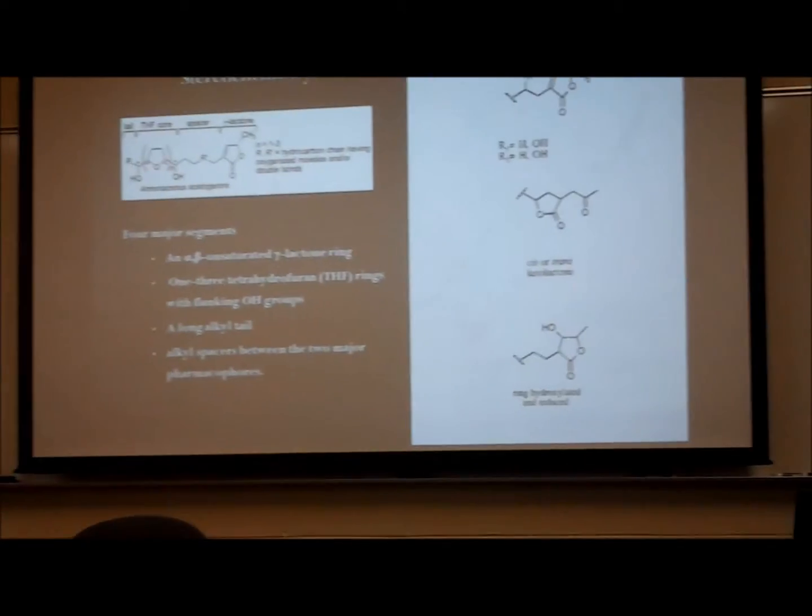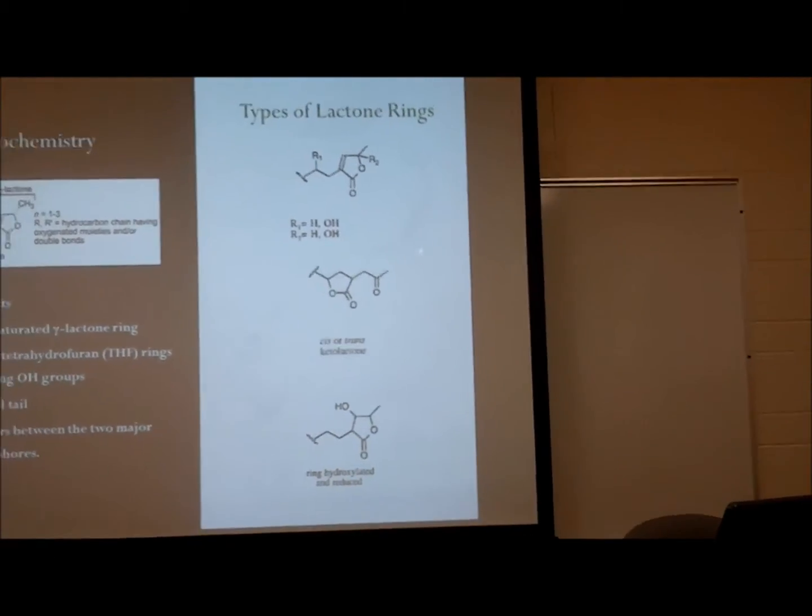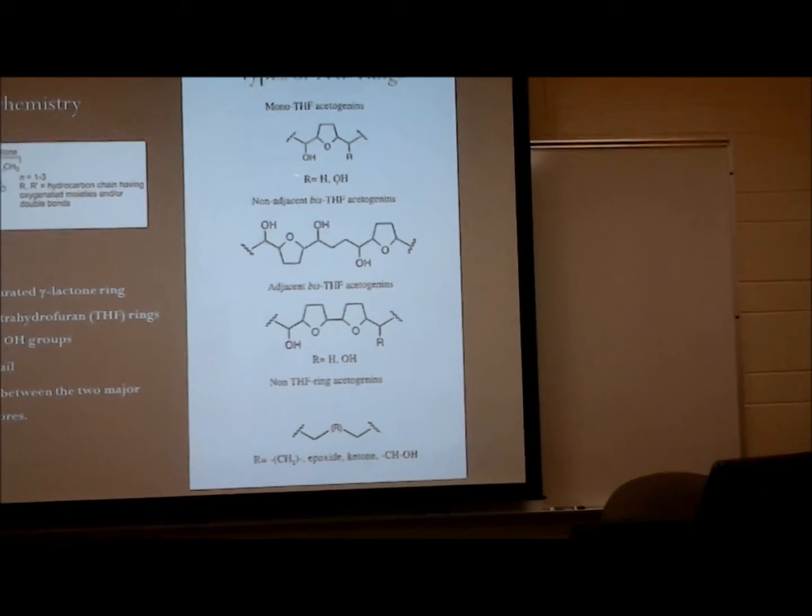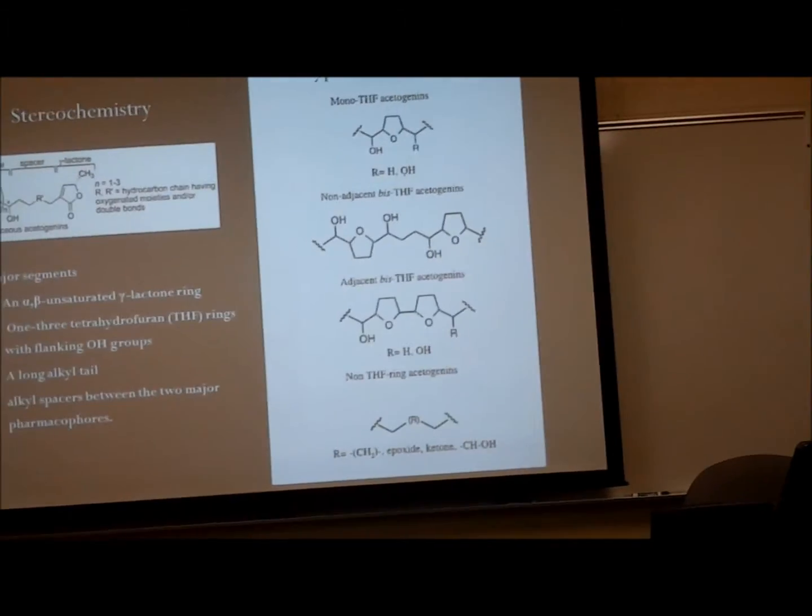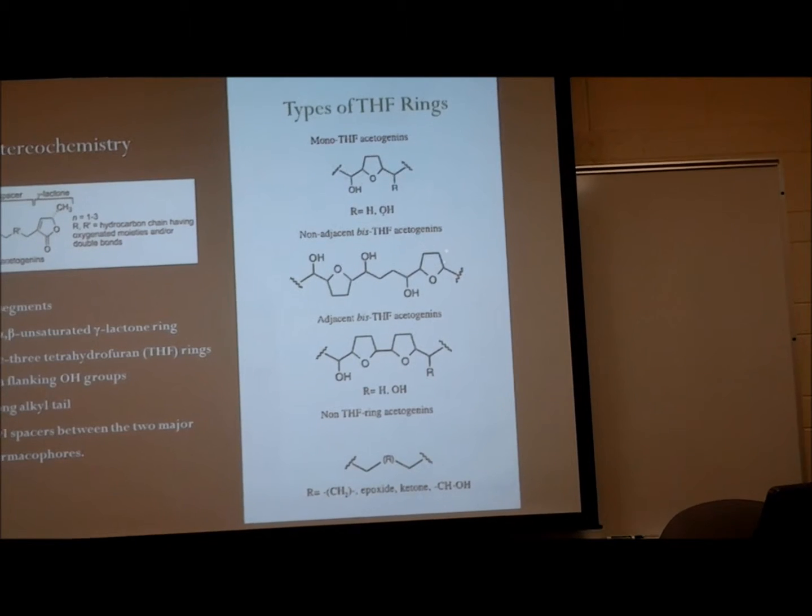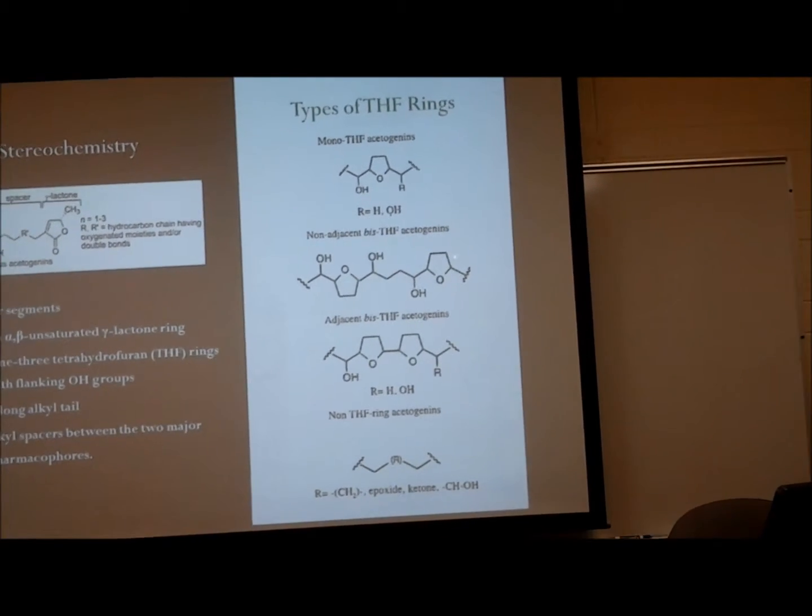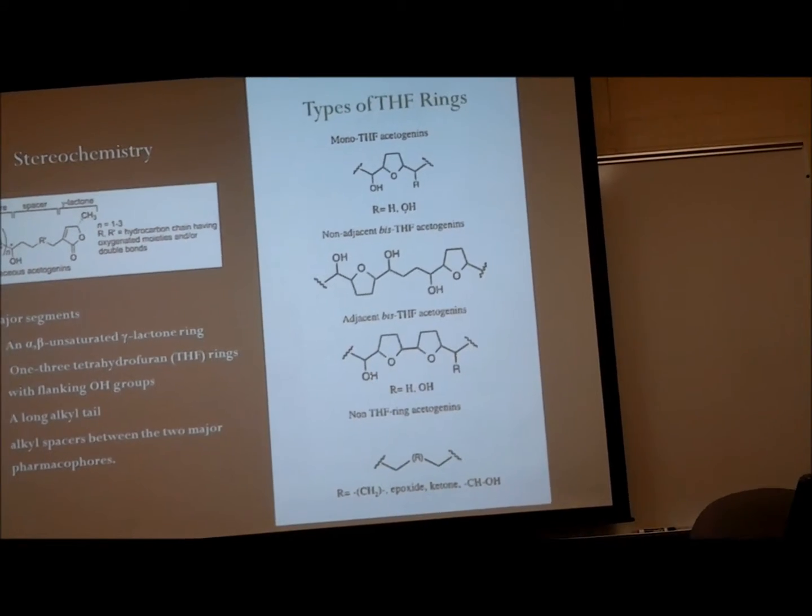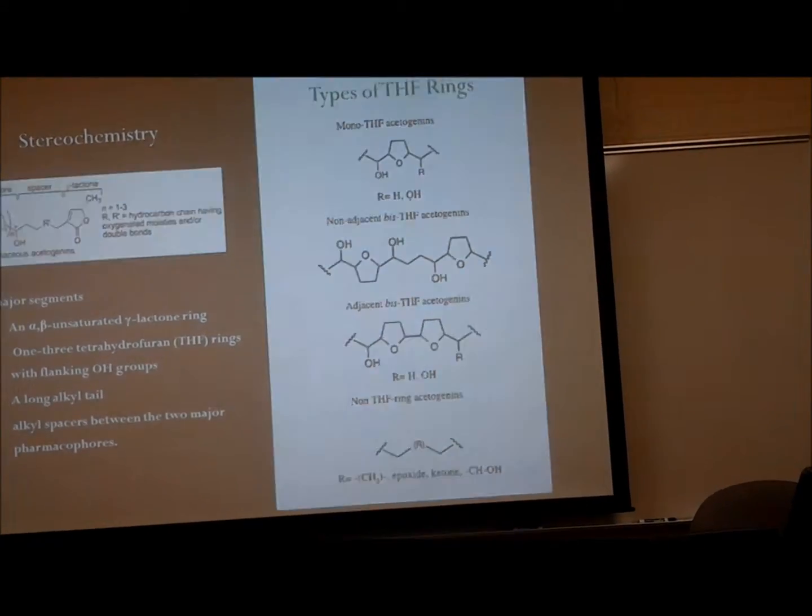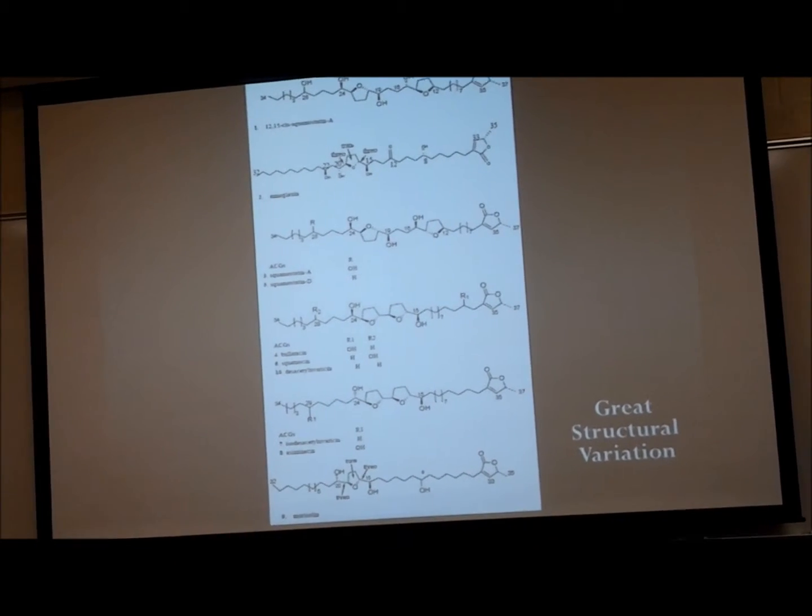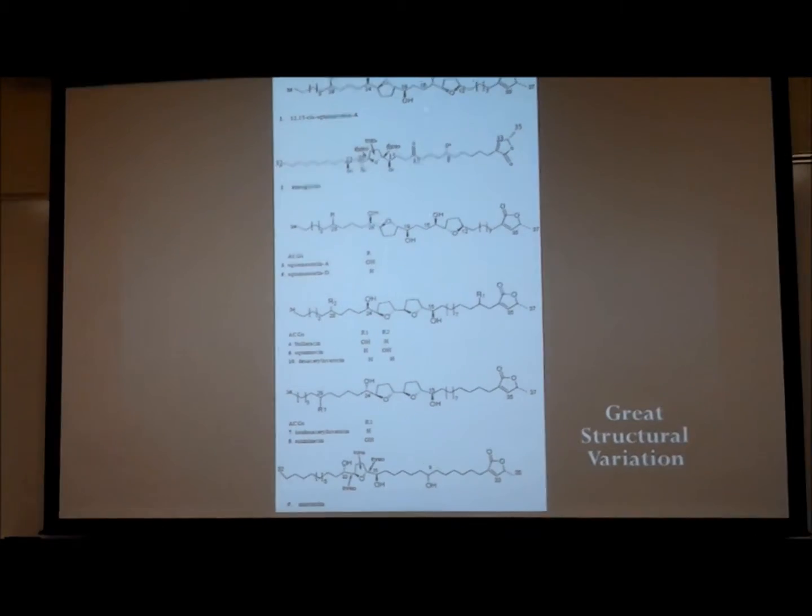To the right, you will see different variations of the lactone rings. You will also notice different variations of the THF rings. These THF rings consist of mono, non-adjacent bis, and adjacent bis THF rings which face the same direction. Altogether, this gives acetogenins great structural variation, making it a very diverse molecule.